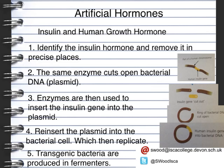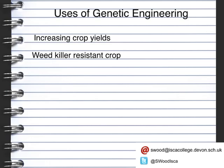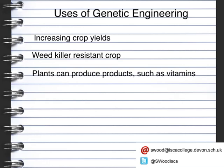Once the insulin is able to be produced, it can then be harvested in large quantities on an industrial scale. Genetic engineering can be really useful — it can be used for things such as increasing crop yield, producing weed killer resistant crops, ensuring plants can produce useful products such as vitamins, and also helping plants to survive in poor conditions.